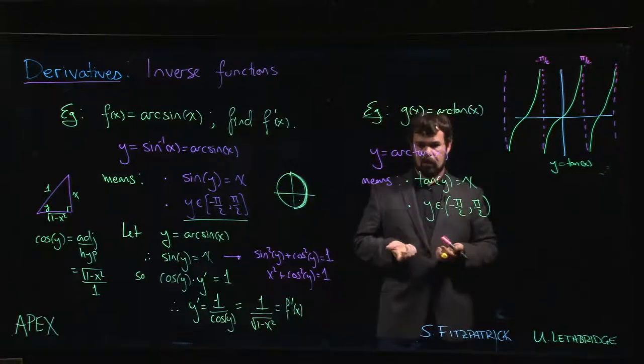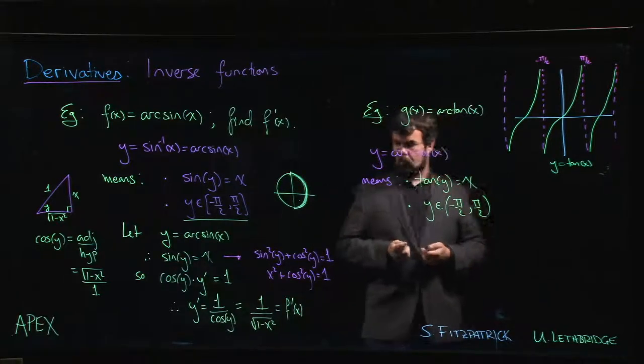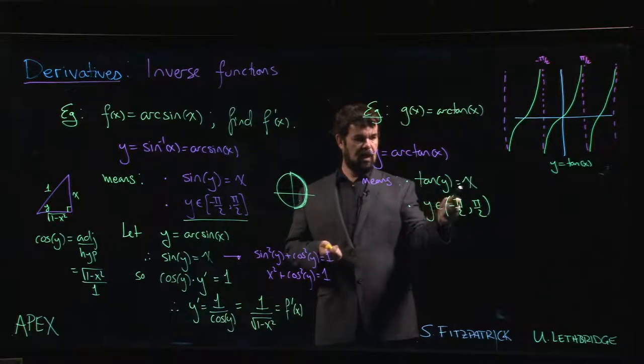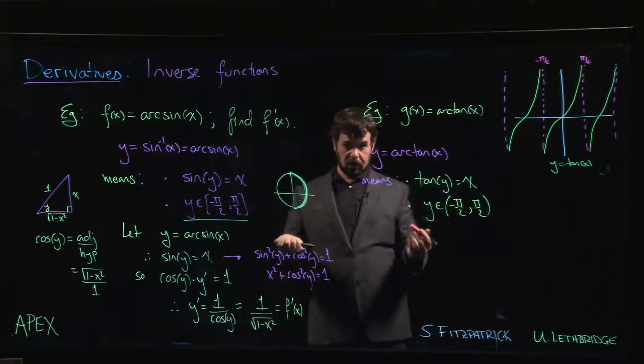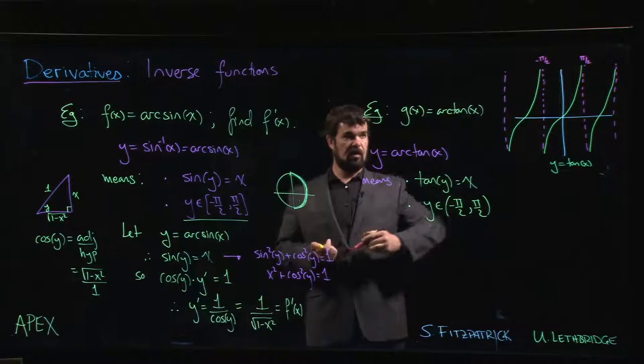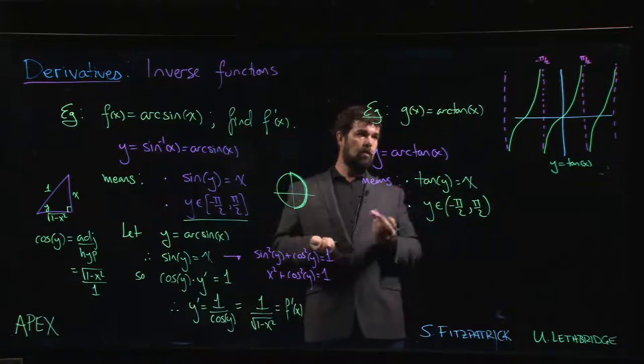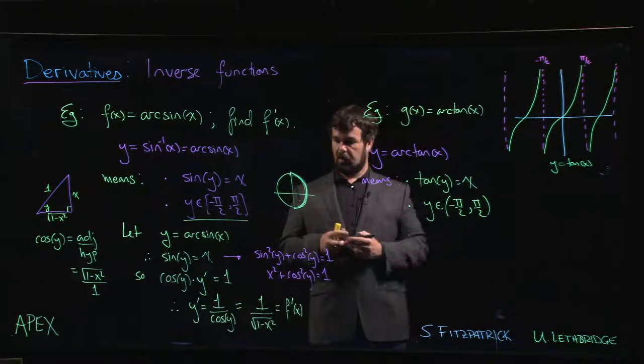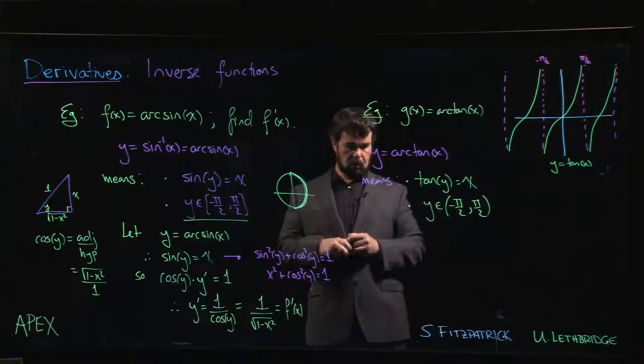Okay, very good. So where do we go from here? Well, once again, from this equation tan y equals x, we can take the derivative of both sides using implicit differentiation. Or if you like, you can use that implicit function theorem formula, whichever way you want.